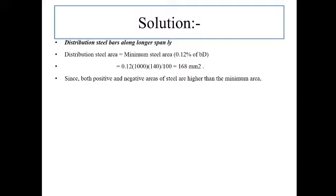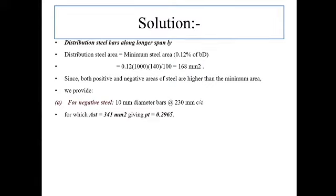For negative steel, provide 10 mm diameter bars at 230 mm center to center, for which AST provided = 341 mm². Spacing equals area of one bar divided by AST required, multiplied by 1000. Reversing this: AST provided = area of one bar divided by spacing provided (230 mm) multiplied by 1000 = 341 mm². Percentage of steel Pt = AST / BD × 100 = 0.2965%.